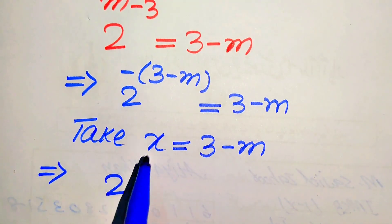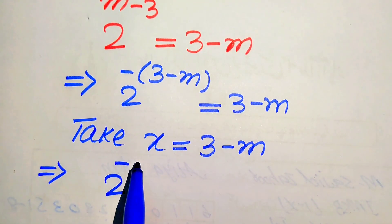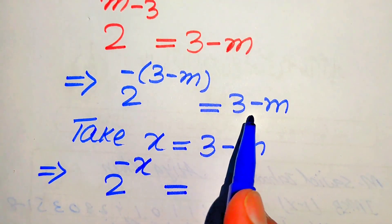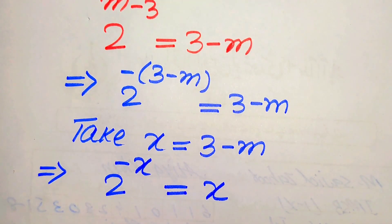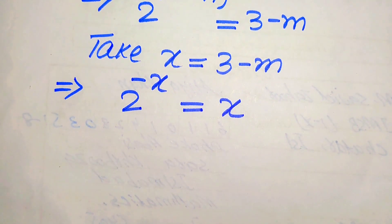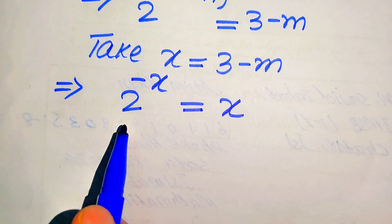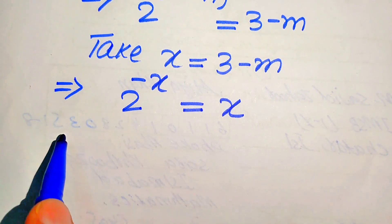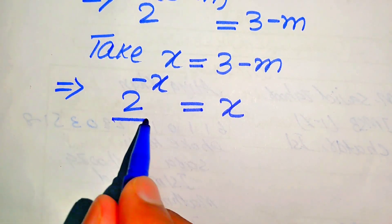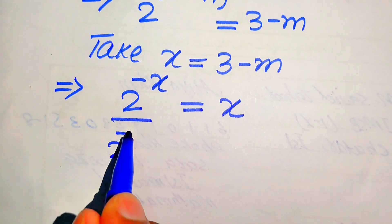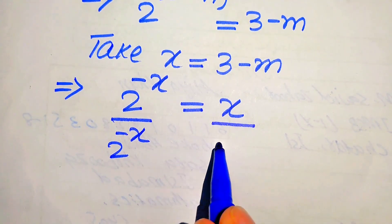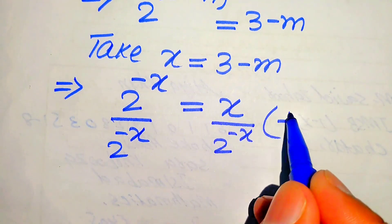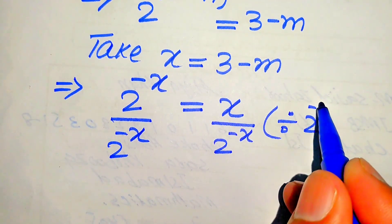After substituting this value we get 2 to the power of minus x is equals to x on the right hand side. Now we move 2 to the power of minus x to the right hand side by dividing both sides by 2 to the power of minus x.